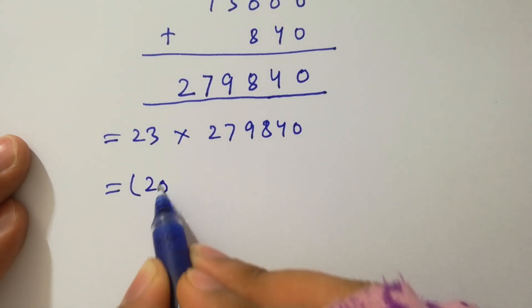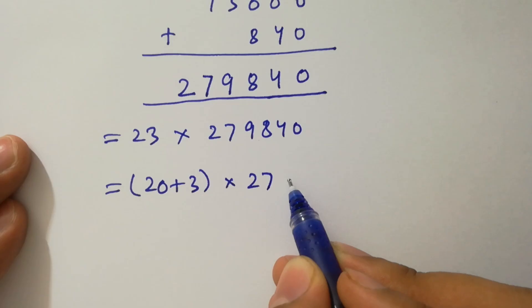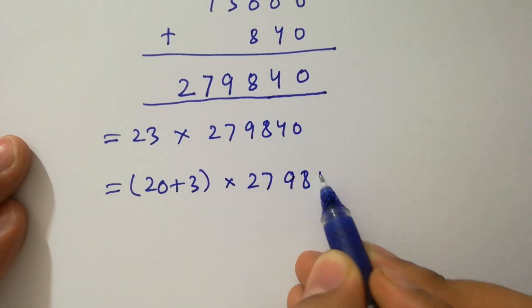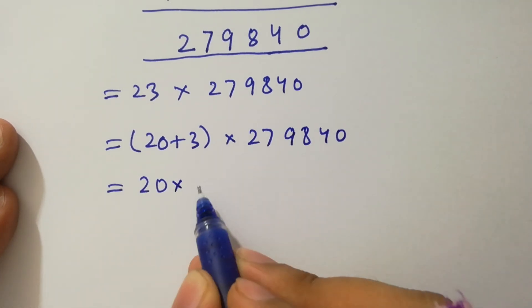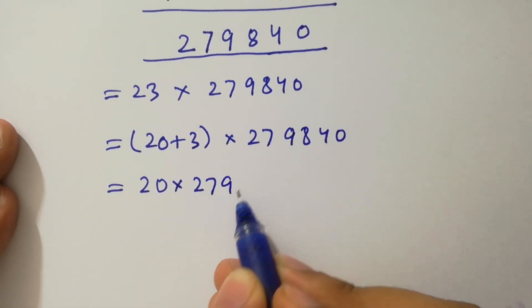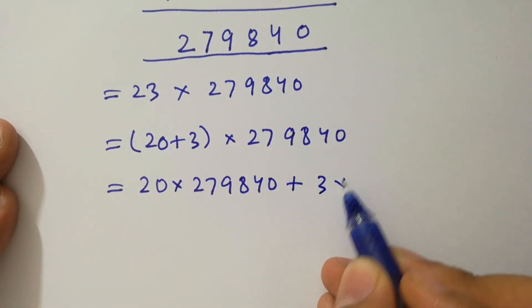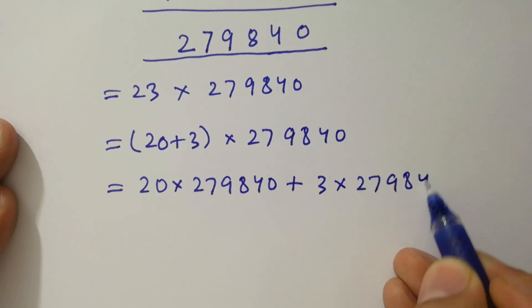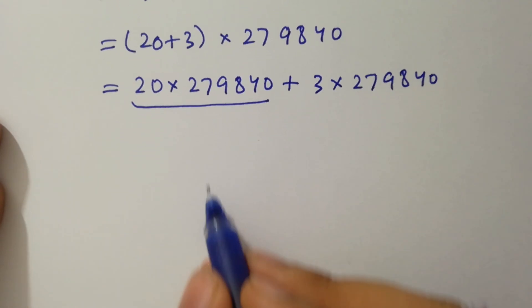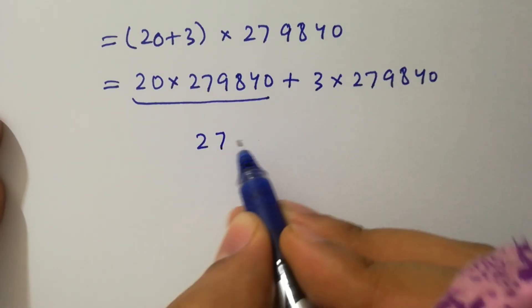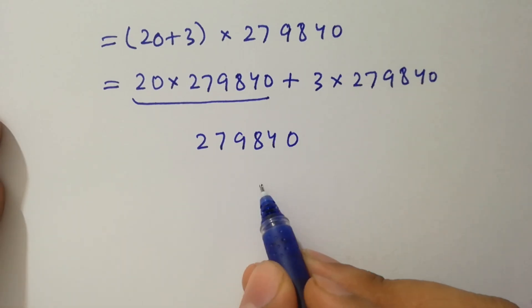Now we break 23 as 20 plus 3. So 23 times 279,840 equals (20 plus 3) times 279,840, which is 20 times 279,840 plus 3 times 279,840.